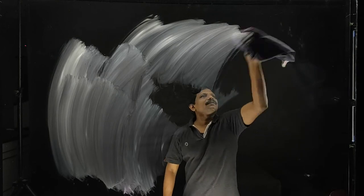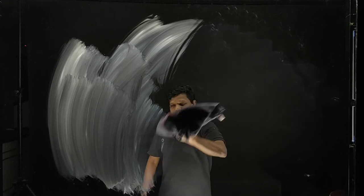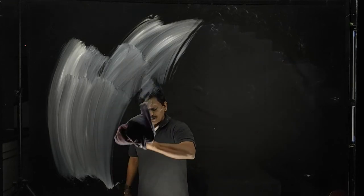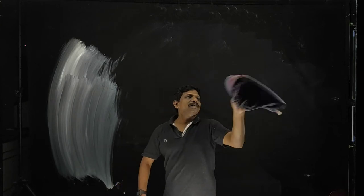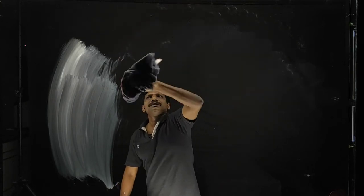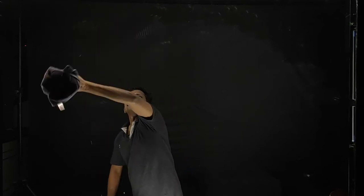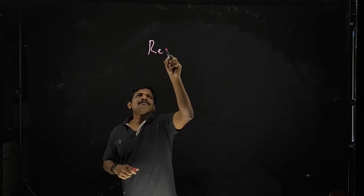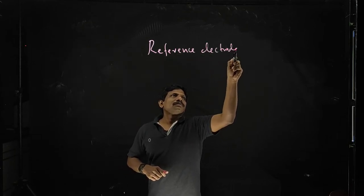I will give you some examples of different types of electrodes. Here, I will explain about the glass electrode and the calomel electrode. Standard hydrogen electrode we already discussed, and before that I will tell you something about the reference electrode.